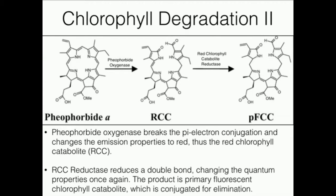There's another enzyme called red chlorophyll catabolite reductase, which takes a specific double bond in RCC and reduces it. Red chlorophyll catabolite reductase gives you a molecule called primary fluorescent chlorophyll catabolite. This is the main degradation product of the chlorophyll; the chlorophyll has been completely broken apart from the plant's perspective at that point.